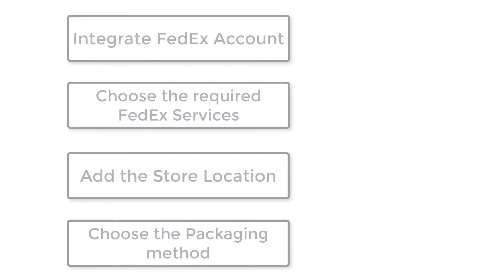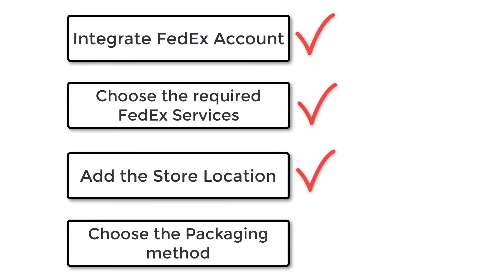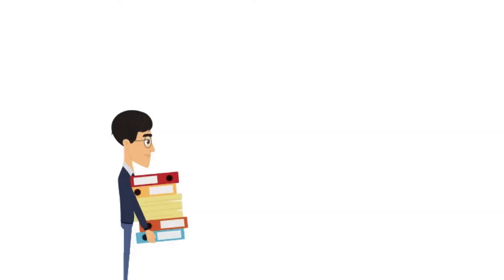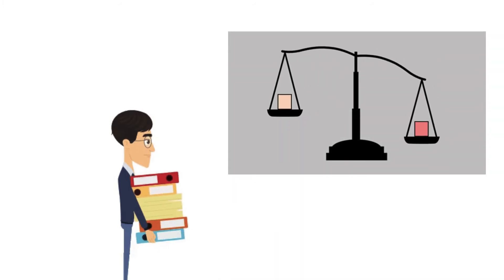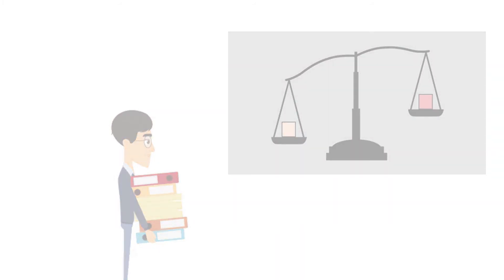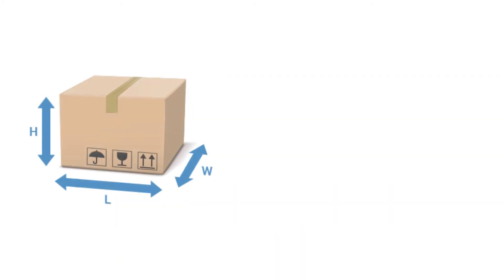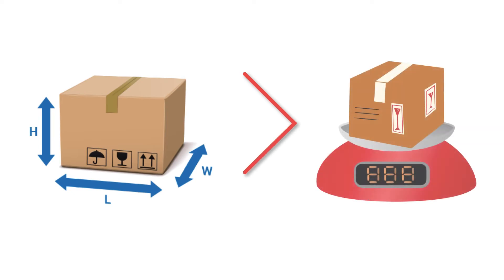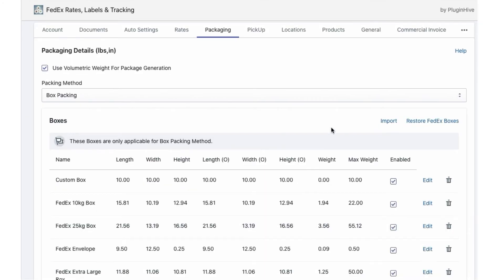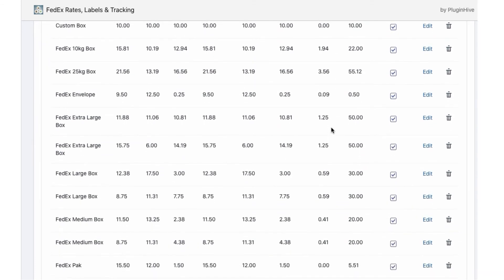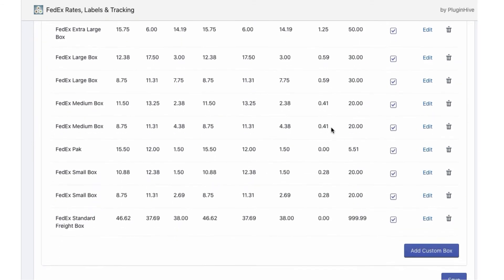The next step is to choose the packaging method. The easiest and most common method is to choose the packaging method based on product weight. But if the volumetric weight of your product is higher than the actual weight, or if you'd like to use FedEx boxes, choose the box packing method.